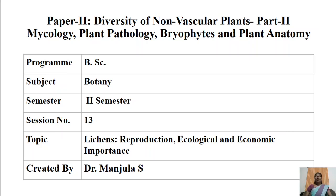Last session we studied about the general account of lichens and their structures. Lichens are a small group of curious plants made up of two living entities — algae and fungi — which are complex in nature. The algal component is referred to as phycobiont and the fungal component is referred to as mycobiont. Lichens are classified into three types based on their fungal component: ascolichen, basidiolichen, and lichen imperfecti.